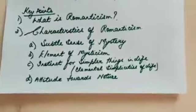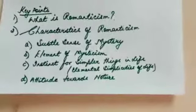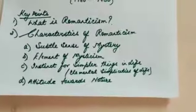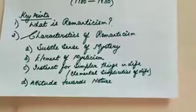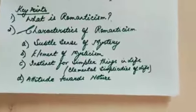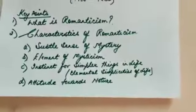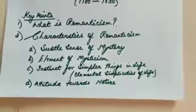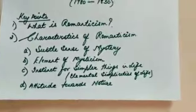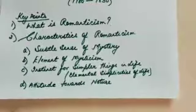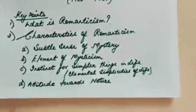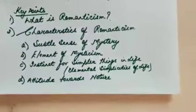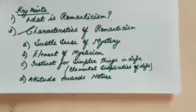Now we come to the characteristics of Romanticism. In general, we can say that there are four characteristics of Romanticism. The first one is the subtle sense of mystery. Second is the element of mysticism. Third is the instinct for simpler things in life, or also we can say the instinct for elemental simplicities of life. And the fourth is attitude towards nature.